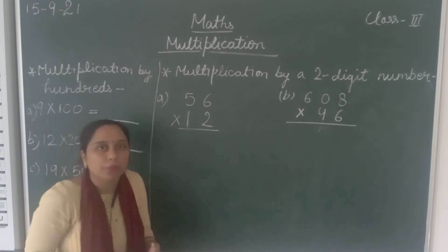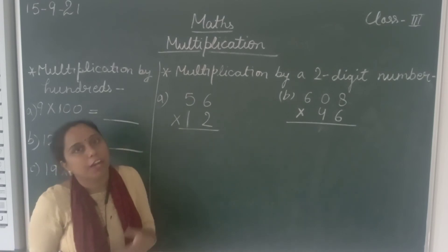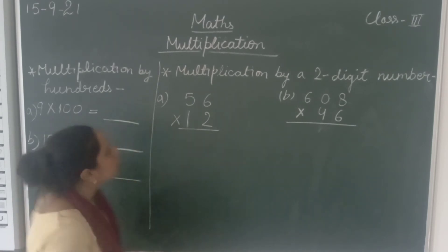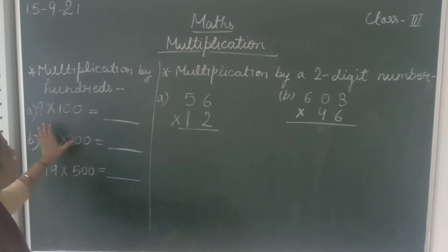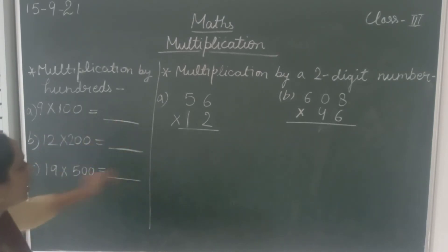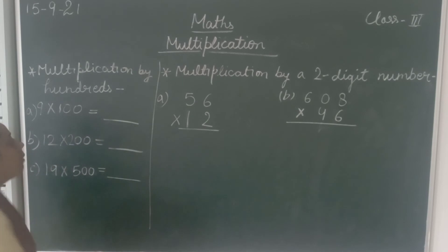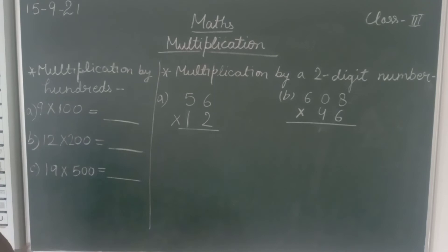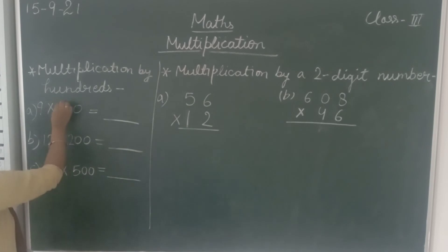It can be 200, 300, 400, and 500. So how to solve that in one step? What you have to do is just forget about the two zeros and multiply the remaining digits. The rule is the same.